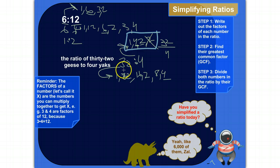So, now we divide both numbers in the ratio by 4. Let's do that up here. So, 32 divided by 4 is 8. And 4 divided by 4 is 1. So, the ratio of 32 geese to 4 yaks can be simplified to 8 geese.